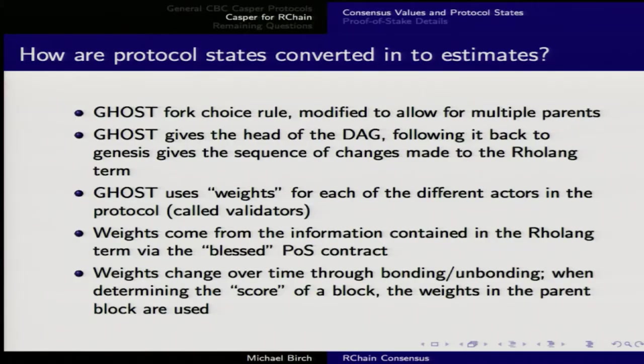At any point you can see a trace of the history. There may be lots of candidate terms at the end of the DAG and each will show different traces, but they'll achieve consensus on some. It will look rather like the Nile: a thin thing running up to the Delta, then spreading out. The part above the Delta is where consensus and finalization have been achieved; at the Delta it spreads into possible futures. GHOST uses weights for each validator, which come from the information in the rolling term via the blessed proof-of-stake contract.